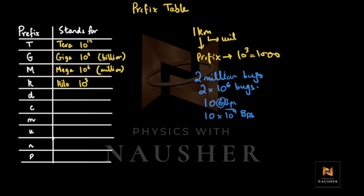Values smaller than kilo: the prefix 'd' stands for deci, which is 10 raised to power minus 1. Then 'c' stands for centi, which is 10 raised to power minus 2. Then milli is 10 raised to power minus 3. Micro is represented by 'u' (since both milli and micro start with m, micro uses u to differentiate), and micro is 10 raised to power minus 6. Small 'n' stands for nano: 10 raised to power minus 9. Small 'p' stands for pico: 10 raised to power minus 12.